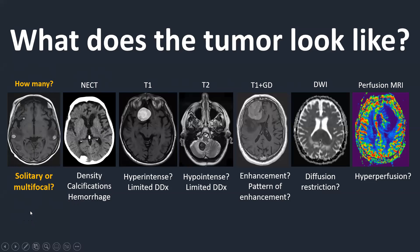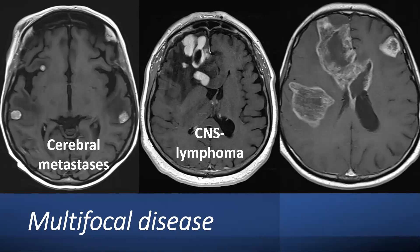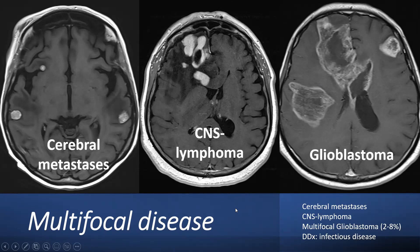Start with: how many lesions do we have? Solitary versus multifocal makes a difference. The differential for multifocal brain tumours is quite limited: cerebral metastases, CNS lymphoma (multifocal in about 35 to 40% of cases), and multifocal glioblastoma (up to 10% of glioblastomas are multifocal with multiple contrast-enhancing lesions). The main non-neoplastic differential for multifocal lesions would be infectious disease, such as fungal abscesses in an immunocompromised patient.